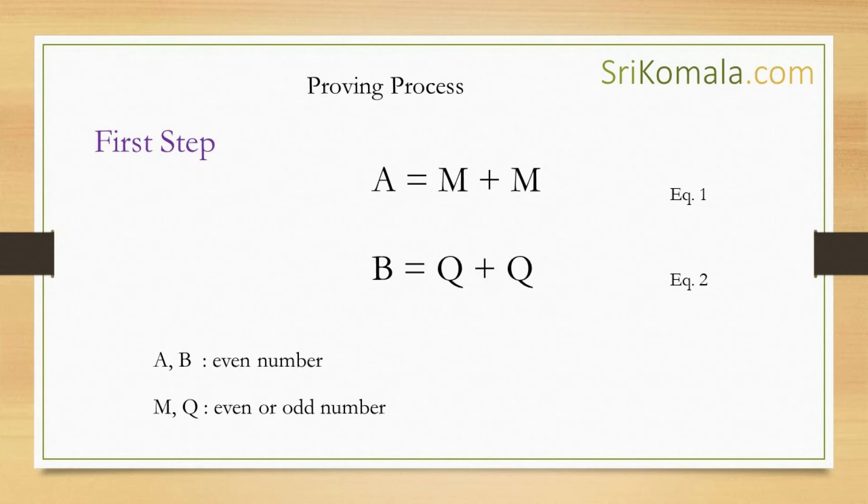Next, let us move to the proving process. The proving process states as follows. First step: Let us take A and B as two different even numbers. Thus, according to axiom number one, A can be expressed as M plus M. Then B can be expressed as Q plus Q.